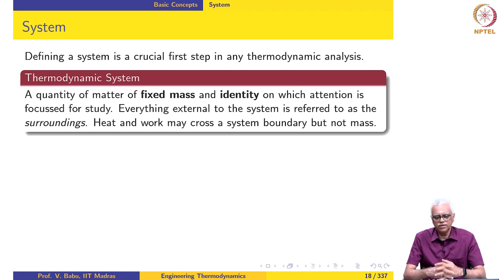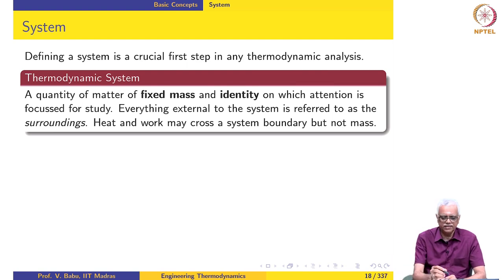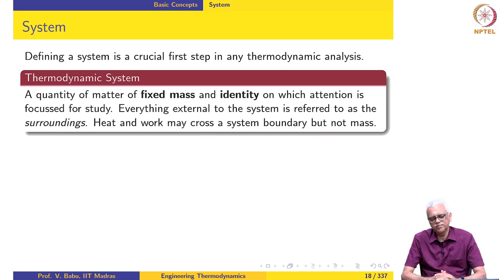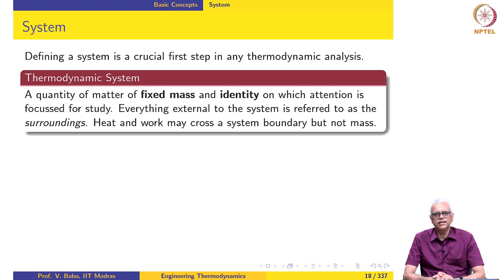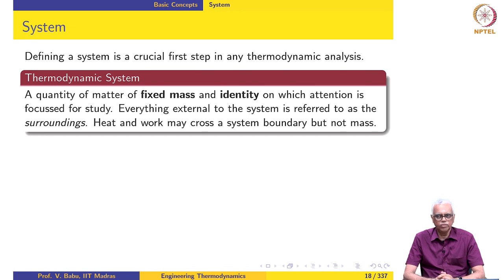Let us explore this definition further in greater detail — we will dissect it and understand each aspect. Notice importantly that the last sentence states: heat and work may cross a system boundary but not mass. This tells you that in the system approach, heat and work are interactions that the system has with the surroundings. Whenever a system interacts with the surroundings, there can be a transfer of work or a transfer of heat.